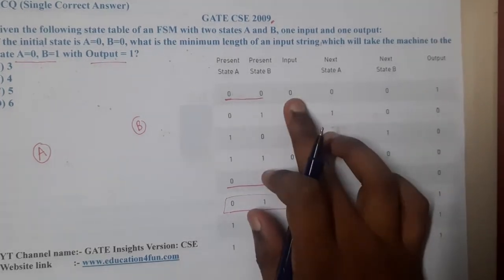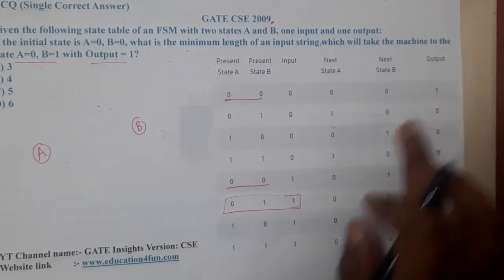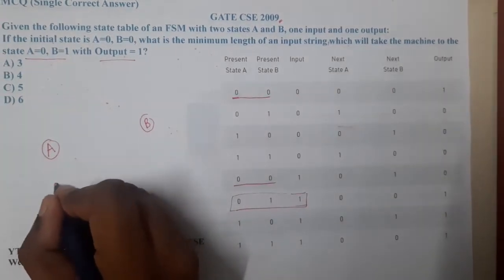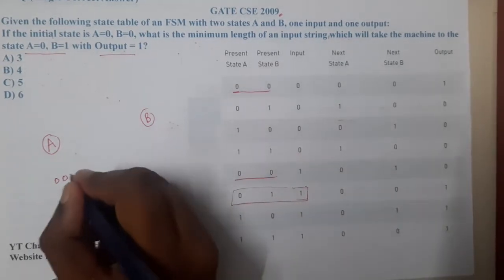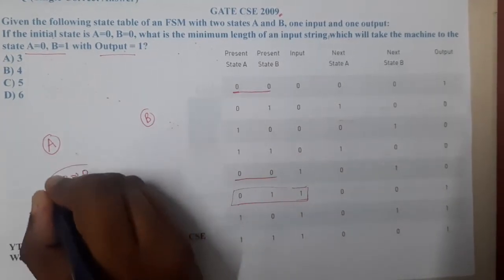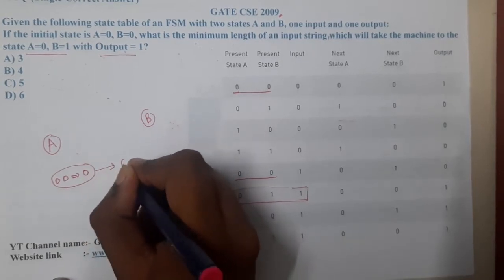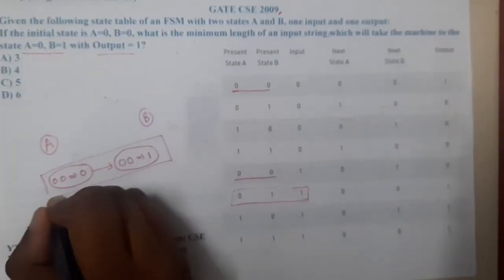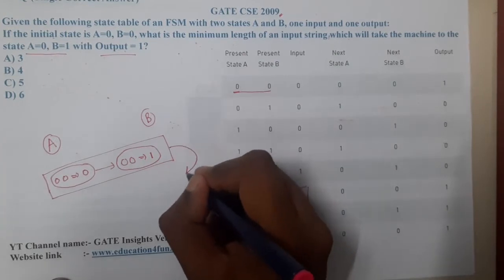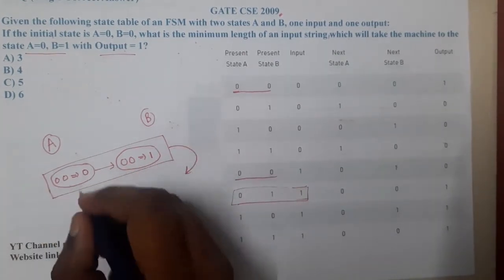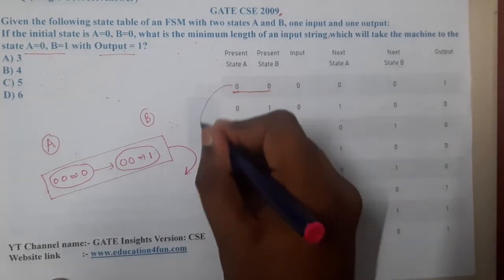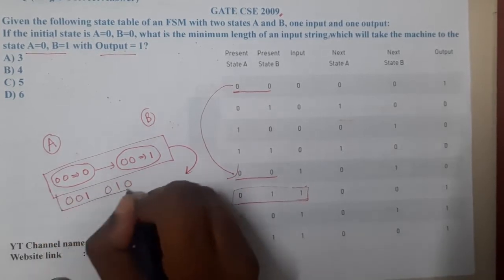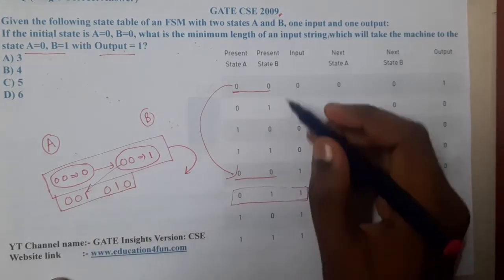From state (0,0) with input 0, you will go to (0,0) with output 1. Let me draw this so it's clearer. From state (0,0) with input 0, you move to (0,0) with output 1. From there, you arrive at state (0,1,0), so let's search for (0,1,0) in the table.